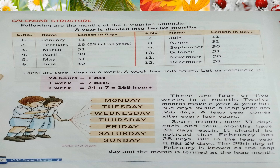Seven months have 31 days each and 4 months have 30 days each. It should be noticed that February has 28 days, but in the leap year it has 29 days. The 29th day of February is known as the leap day, and the month is termed as the leap month.